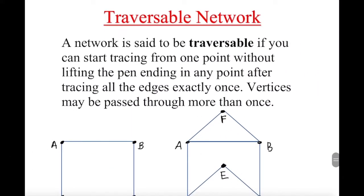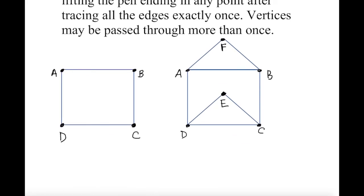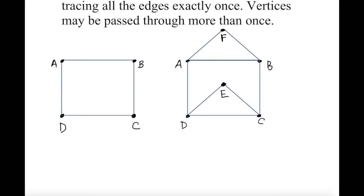A network is said to be traversable if you can start tracing from one point without lifting the pen, ending at any point, after tracing all the edges exactly once. Vertices may be passed through more than once. So you can cross vertices more than once, but edges only once — you cannot cross edges more than once.